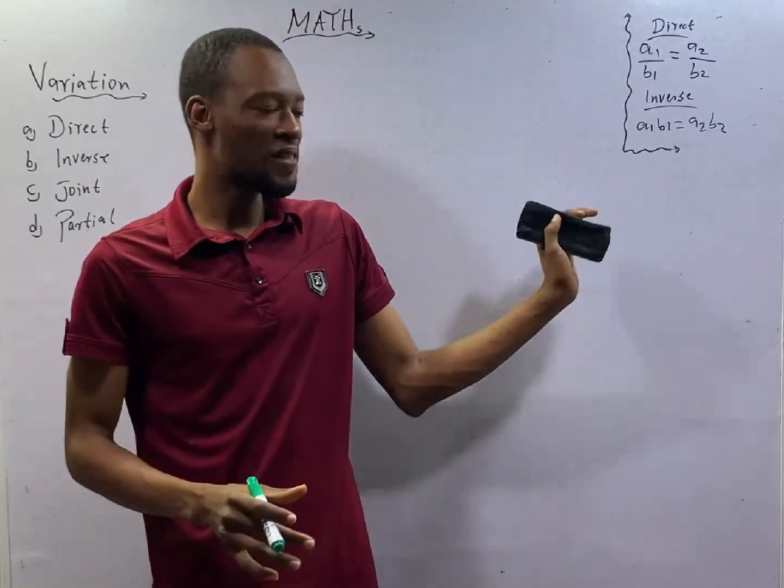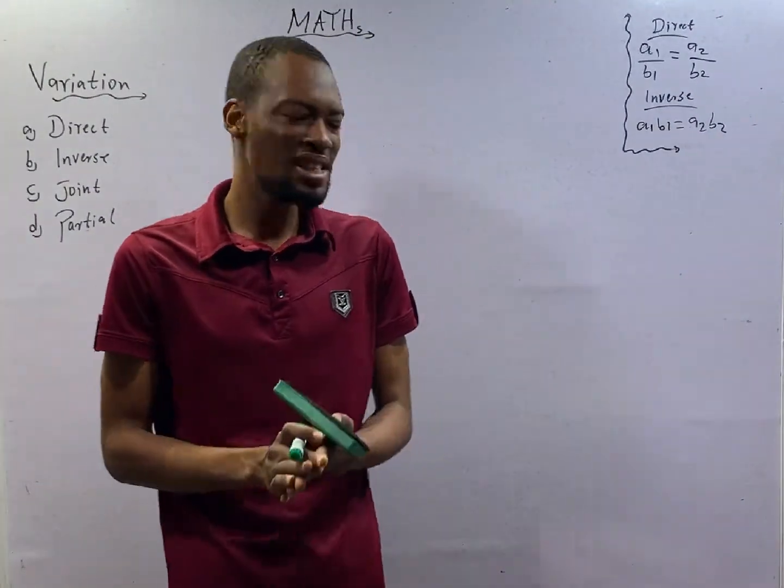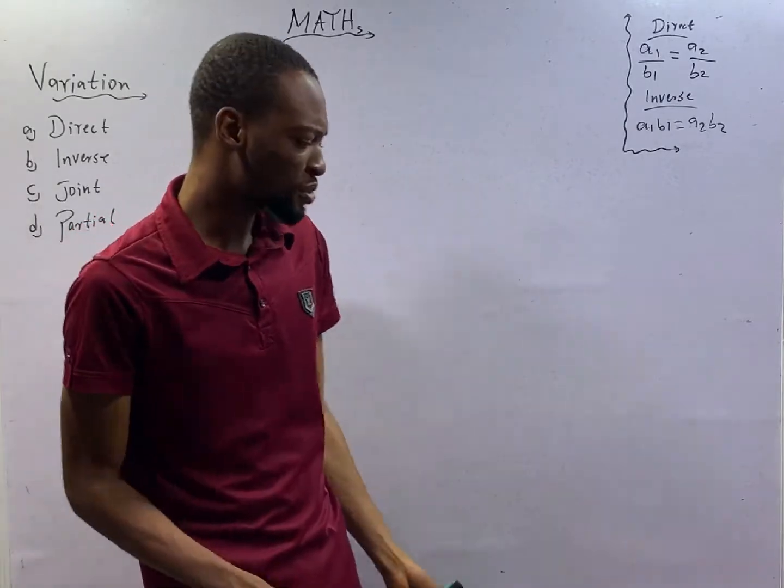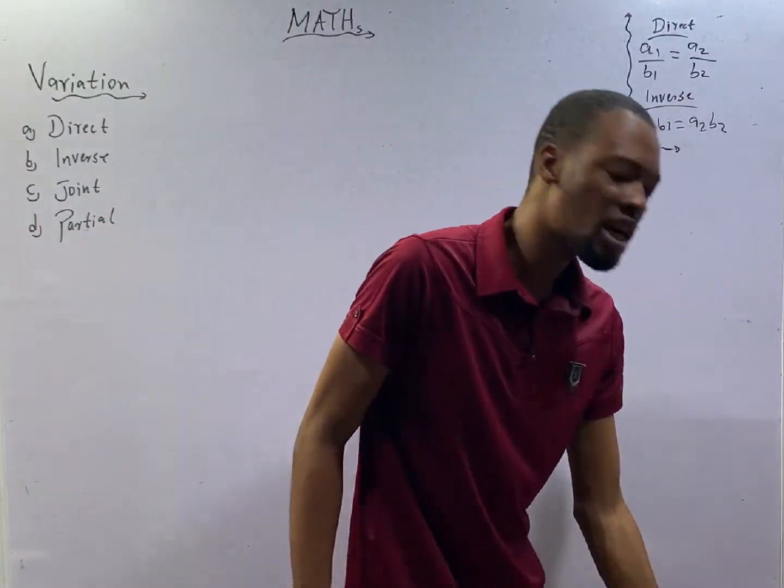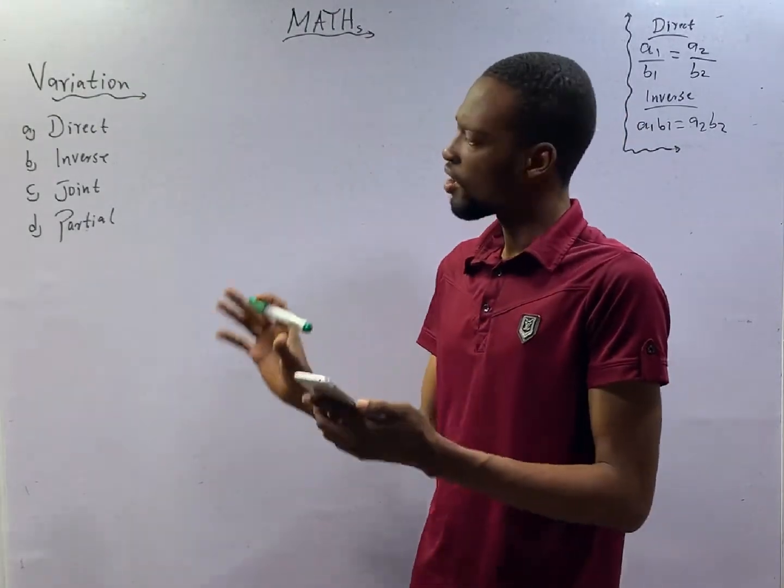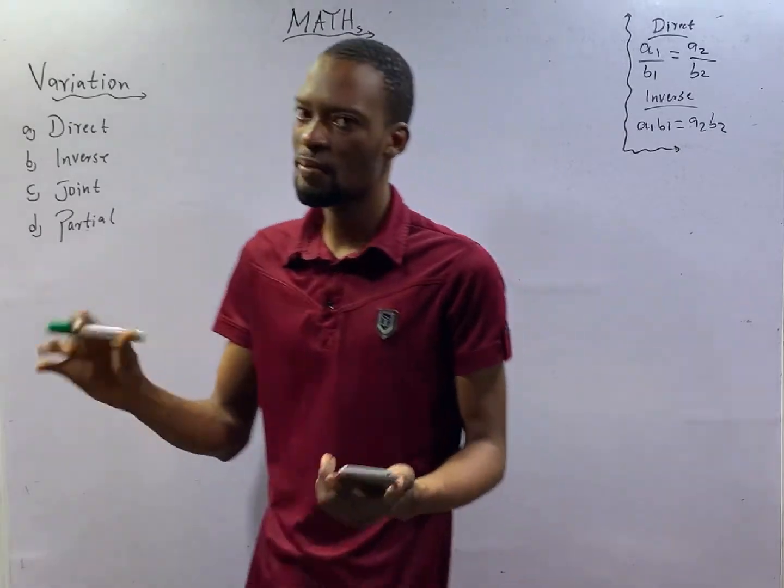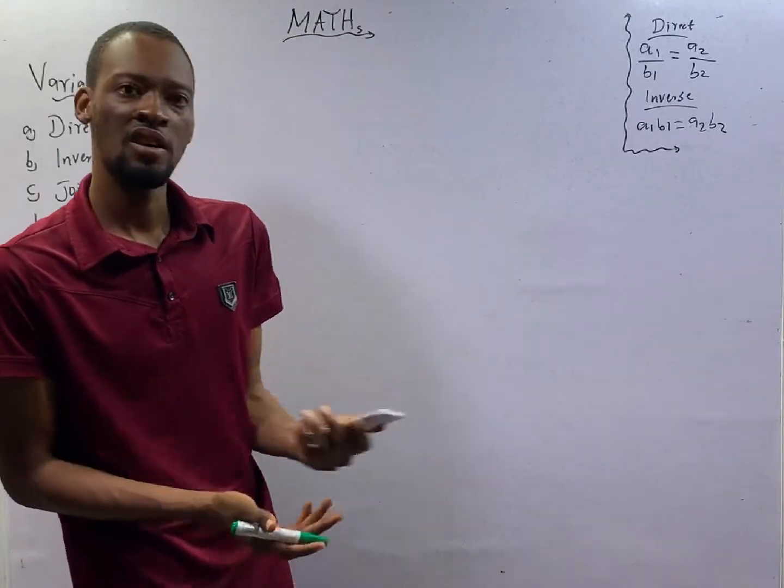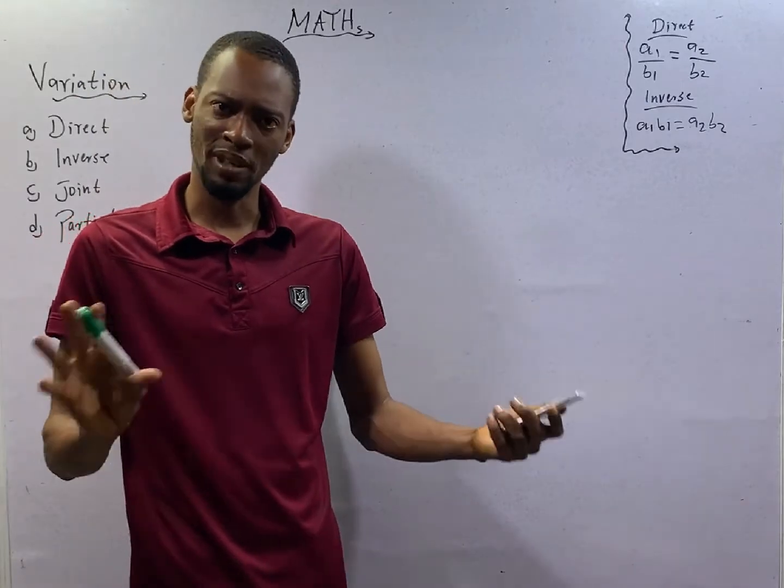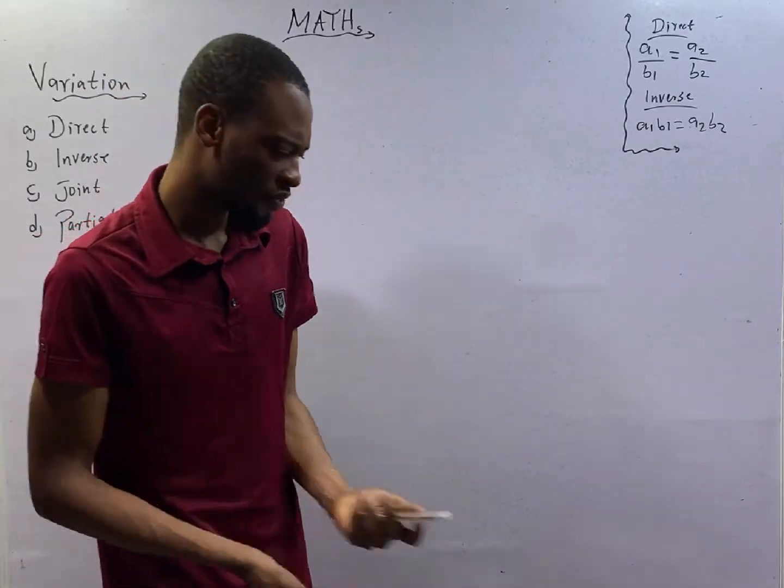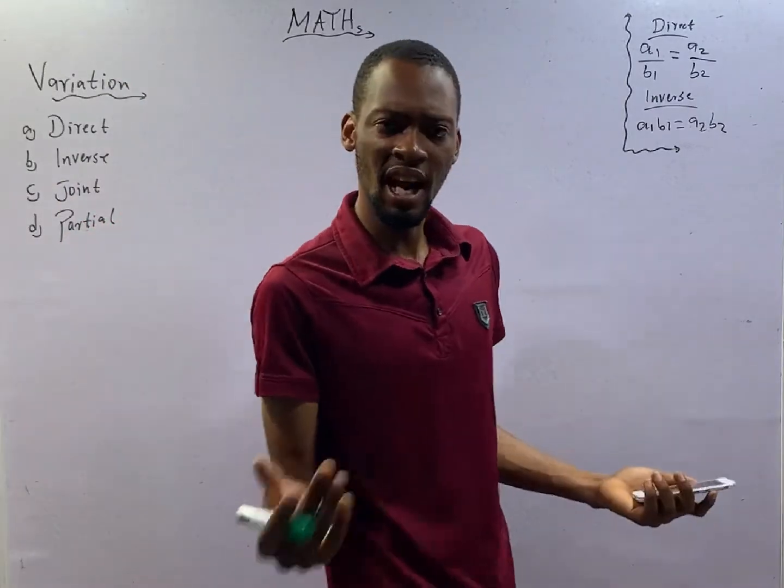This is episode number 38 of the 120 days to JAMB mathematics with Flash Isaac. In this episode, we shall continue answering questions under variation. And we are using the Flash Learners JAMB application. Install yours right now and begin to enjoy. The app is a very amazing application packed with so much features that you enjoy. Install and check everything out.